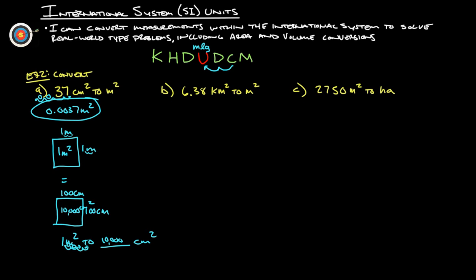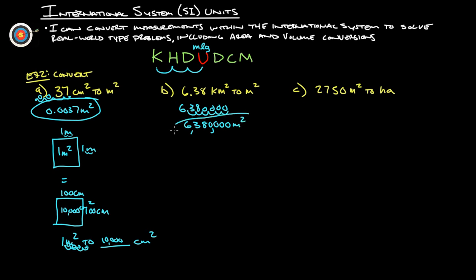Same idea going from kilometers squared to meters squared. Here's kilo and there's meters, so we go three to the right. But since it's squared, we have to do it twice — three more — so six total spots to the right. We have 6.38: one, two, three, then one, two, three more. Fill all empty spaces with zeros. That gives us 6,380,000 meters squared. So 6.38 kilometers squared is 6,380,000 meters squared.